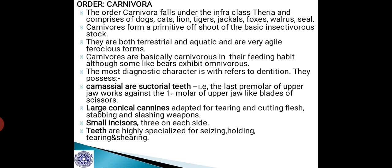The first one being carnassial teeth, also known as sectorial teeth. The last premolar of the upper jaw works against the first molar of the lower jaw like the blades of scissors. They have large conical canines adapted for tearing and cutting flesh as well as stabbing and slashing. They have small incisors — three on each side of the upper and lower jaws. Teeth are highly specialized for seizing, holding, tearing and shearing.